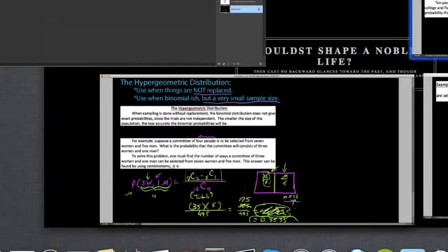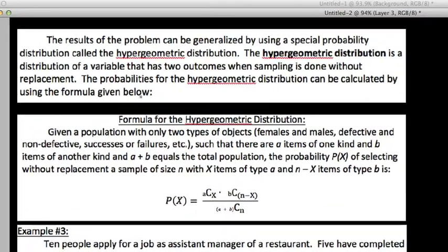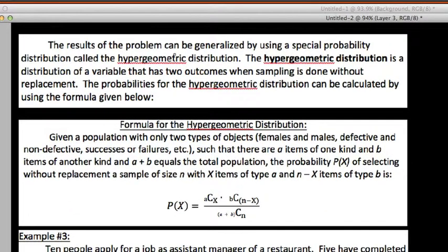But what I want to do in this video is since we're introducing ourselves to this, I want to show you the formal way of kind of defining this. But it says the result of the problem that we just did could be generalized using a special probability distribution called the hypergeometric distribution we use with small samples and without replacement.